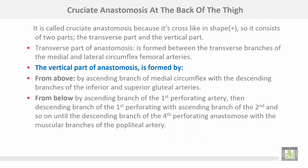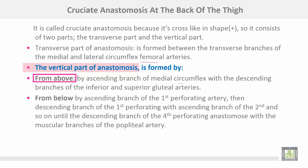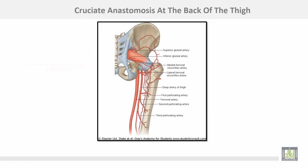The cruciate anastomosis at the back of the thigh is called cruciate because it is cross-like in shape, consisting of a transverse part and a vertical part. The transverse part is formed between the transverse branches of the medial and lateral circumflex femoral arteries. The vertical part is formed from above downwards by the ascending branch of the medial circumflex with the descending branch of the inferior and superior gluteal arteries, then the ascending branch from the first perforating artery, descending branch of the first perforating with ascending of the second, and so on until the descending branch of the fourth perforating anastomoses with muscular branches from the popliteal artery.